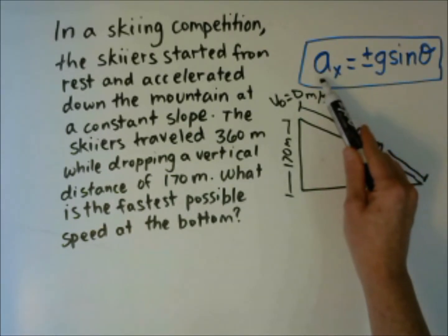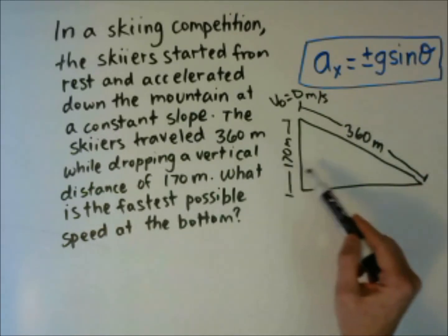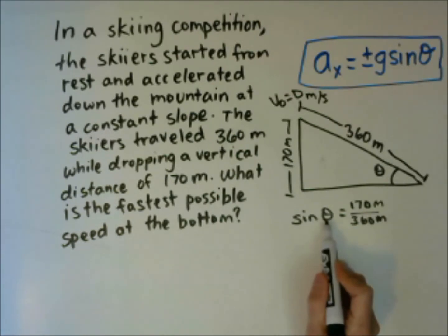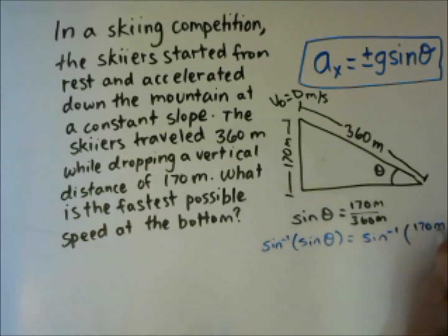Well, to find it, we have g, but we need to find the angle theta. Since we have these two numbers, 360 and 170, we can find theta by using our sine rule. And when we have sine theta over here, we are going to need to do the inverse sine. That will give us theta. Make sure you are in degrees in your calculator. Divide 170 by 360 and then take the inverse sine. And you will get 28 degrees.